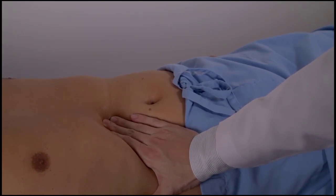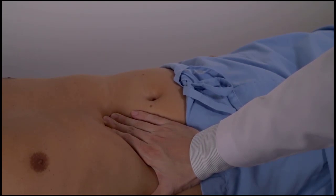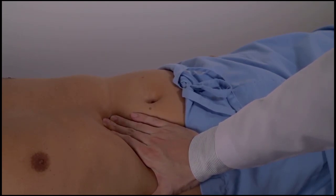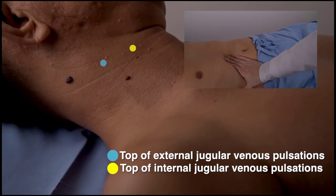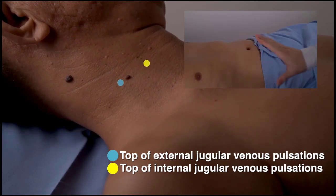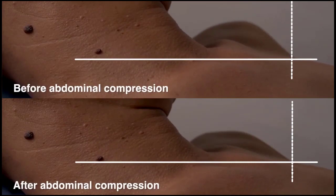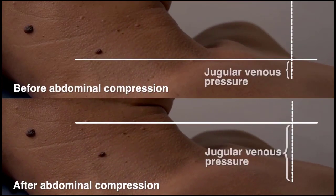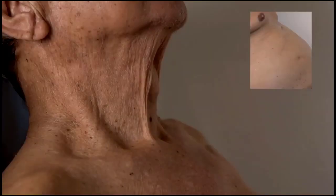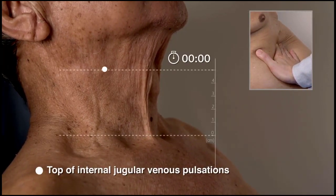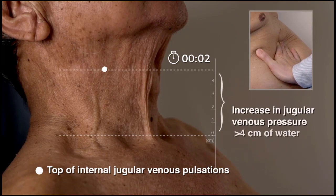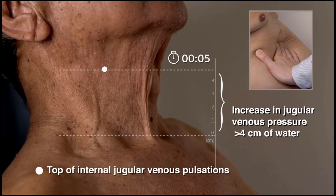Exert moderate and sustained pressure for approximately 10 seconds. Remember to use extreme caution or avoid this technique if the patient has abdominal pain or a history of abdominal aortic aneurysm. Then note the increase in the filling of the jugular vein and measure the pressure in centimeters of water. Compare this measurement with the previously obtained measurement of the jugular venous pressure. Note for how many seconds the increase in the jugular venous pressure is sustained. The abdominal jugular reflux test result is abnormal when the increase in the jugular venous pressure is more than 4 centimeters of water and is sustained for the entire 10 seconds of abdominal compression.